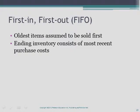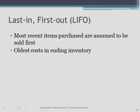Under the FIFO method, the first costs into inventory are the first costs assigned to cost of goods sold — hence the name First In, First Out. Under FIFO, the cost of ending inventory is always based on the latest costs incurred. Under LIFO, the last costs into inventory go immediately to cost of goods sold, and the cost of ending inventory is always based on the oldest costs.